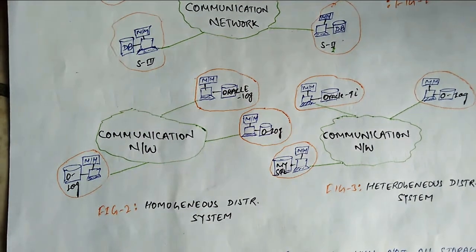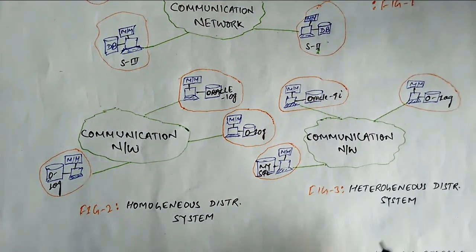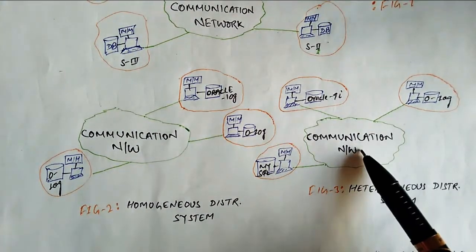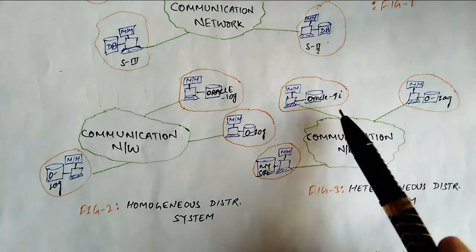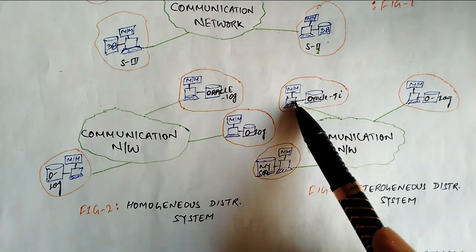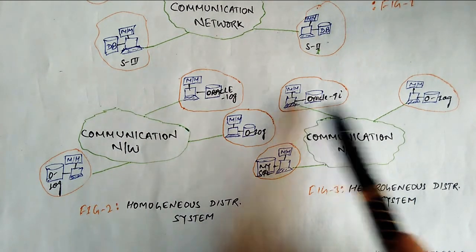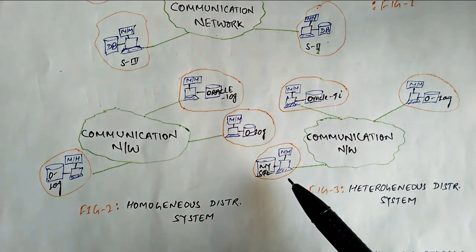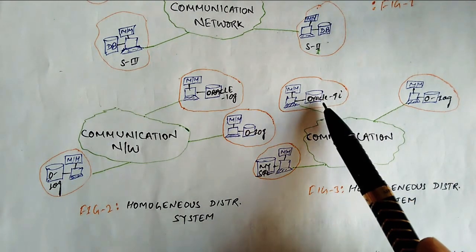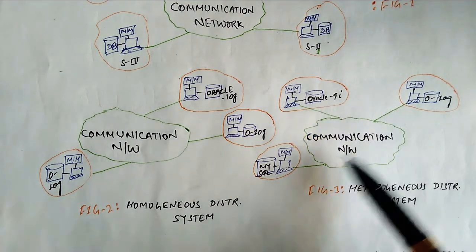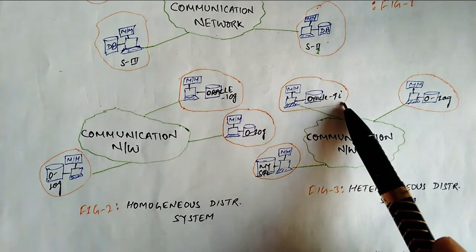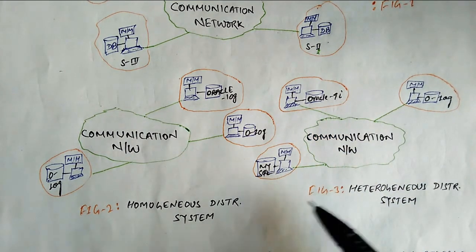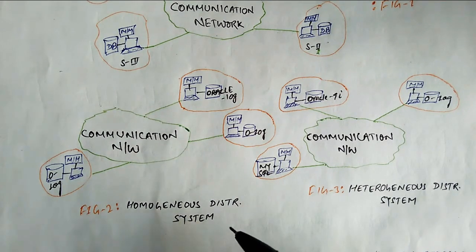In Figure 3, we can see that three sites are connected to the communication network. Here the operating system will be different for all sites, the data structure can be different, and the database management system is also different — for example, Oracle 9i on one site and Oracle 10G on another.